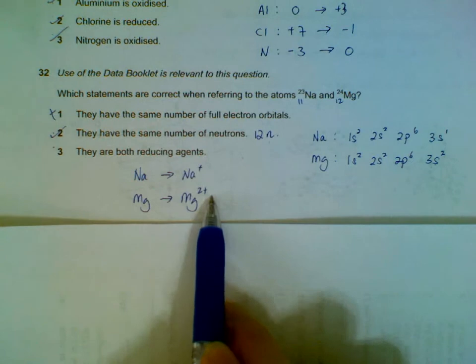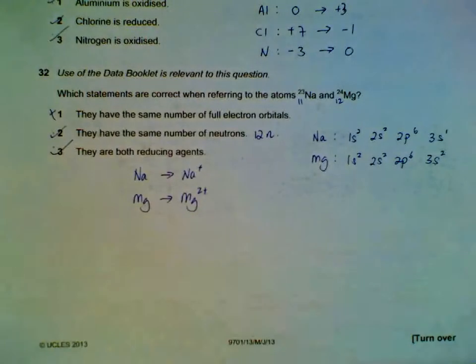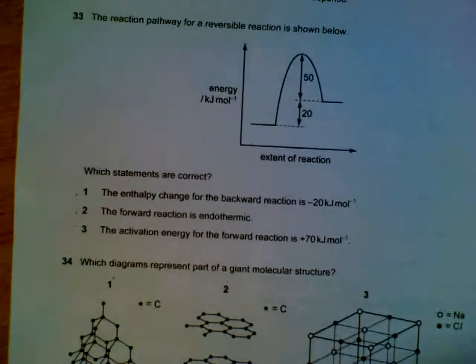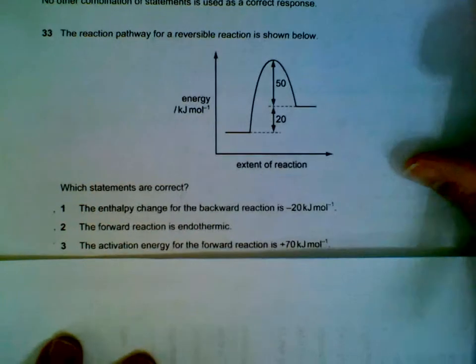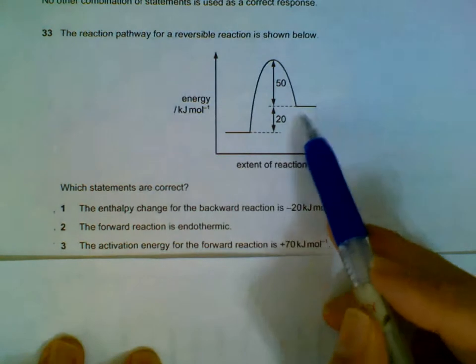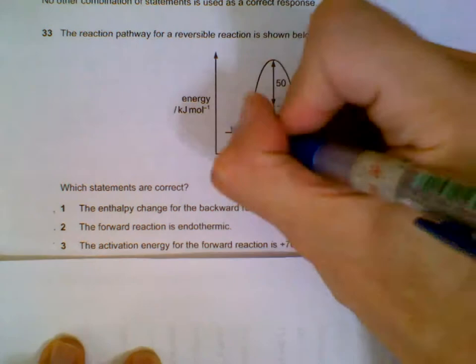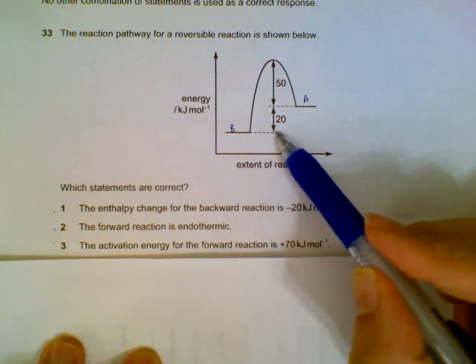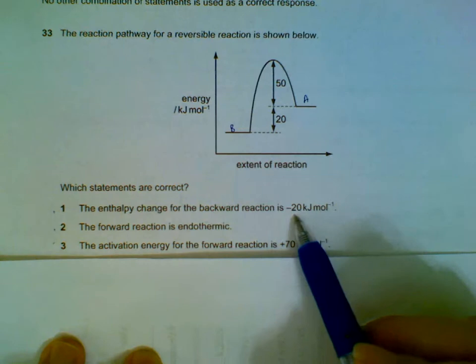Reaction pathway for reversible reaction - the backward reaction. So we are comparing the amount of energy of A versus B, and B has 20 kilojoules less than A. So enthalpy change for the backward reaction is decreased by 20 kilojoules. That's correct.